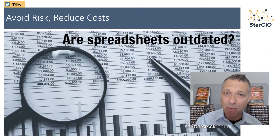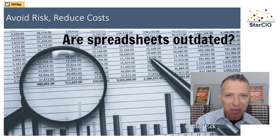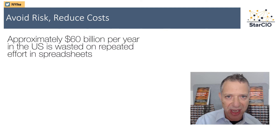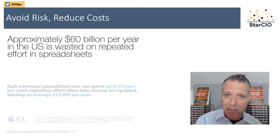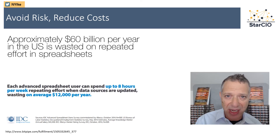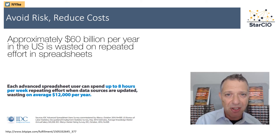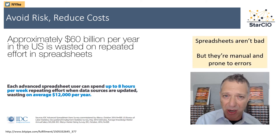The second way to explain data governance to the CEO and business leaders is through the lens of risk and cost. Every one of them knows about the use of spreadsheets in your organization for reporting. What they probably don't understand is the cost: 60 billion dollars in the US alone is being spent to keep spreadsheets updated — the manual hours it takes when there are updated data sources and reporting done manually. Spreadsheets aren't inherently bad, but they are error-prone and costly to support.